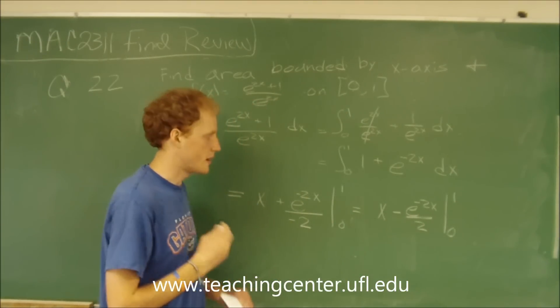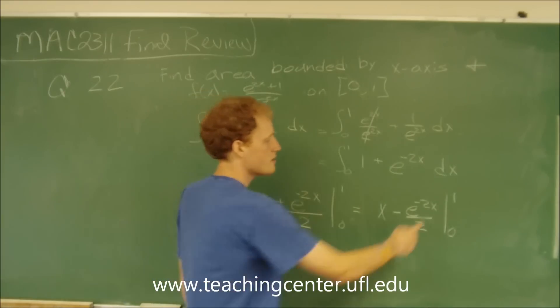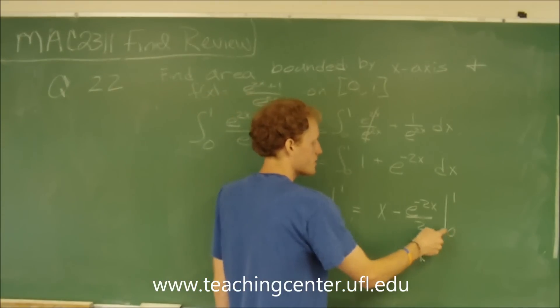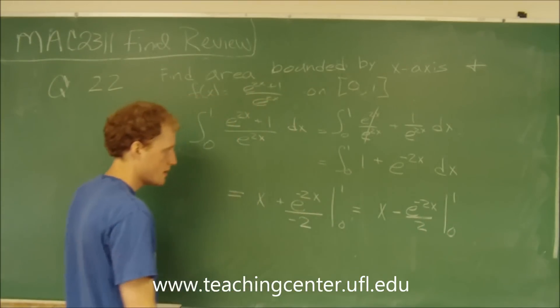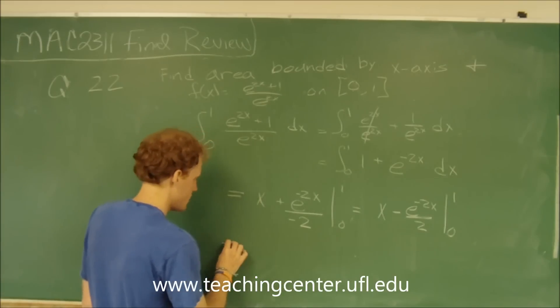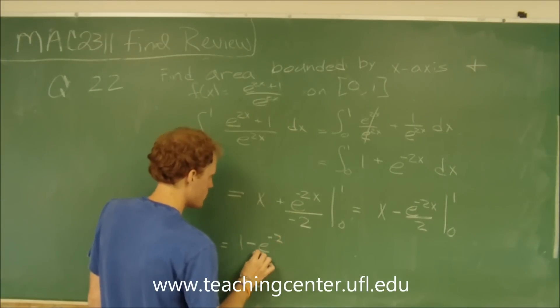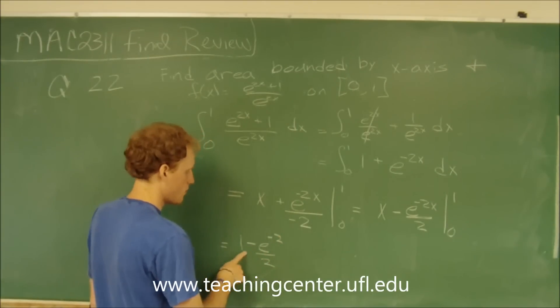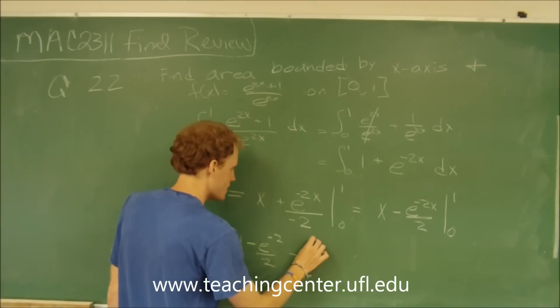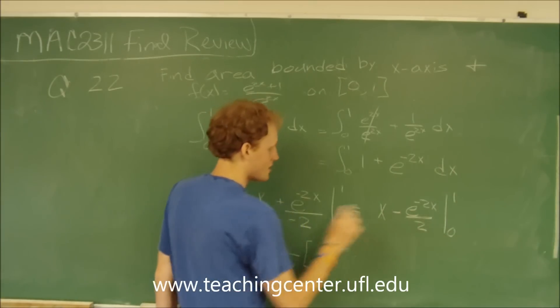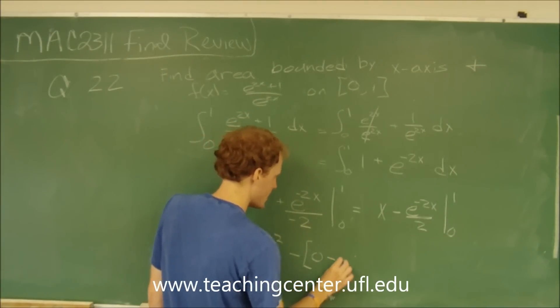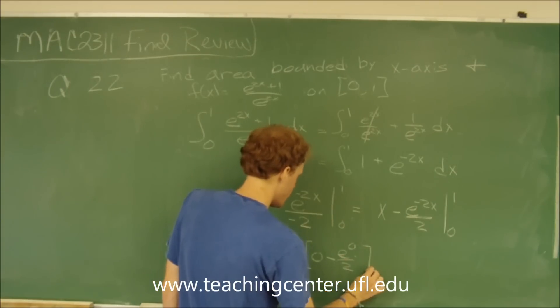Now we just have to use the fundamental theorem of calculus. Plug in the upper limit, subtract when we plug in the lower limit. We're going to get 1 minus e to the negative 2 over 2 when we plug in 1, minus plug in 0, we get 0 minus e to the 0 over 2.